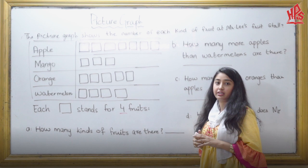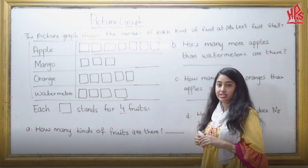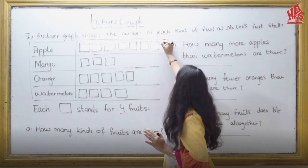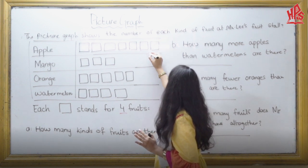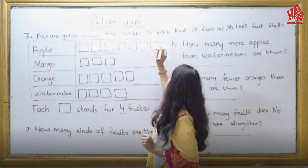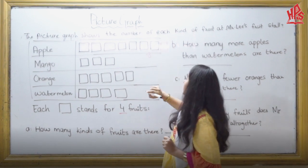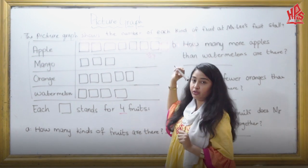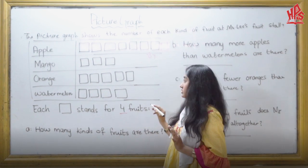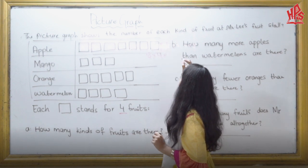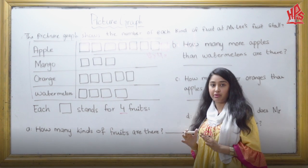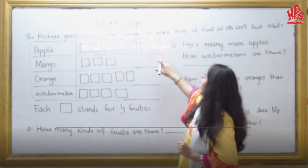We have 8 boxes, but we don't know the total yet. We have 8 × 4, because each picture stands for 4 fruits. So you can do 8 × 4 or 4 × 8 — same answer. So 8 × 4 is 32.